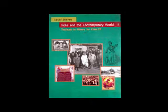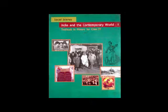Some important dates: 1774 — Louis XVI becomes king of France, faces empty treasury and growing discontent within the society of the old regime. 1789 — Convocation of estates general, third estate forms national assembly, the Bastille is stormed, peasant revolts in the countryside. 1791 — A constitution is framed to limit the powers of the king and to guarantee basic rights to all human beings. 1792–93 — France becomes a republic, the king is beheaded; overthrow of the Jacobin Republic, a directory rules France. 1804 — Napoleon becomes emperor of France, annexes large parts of Europe. 1815 — Napoleon defeated at Waterloo.